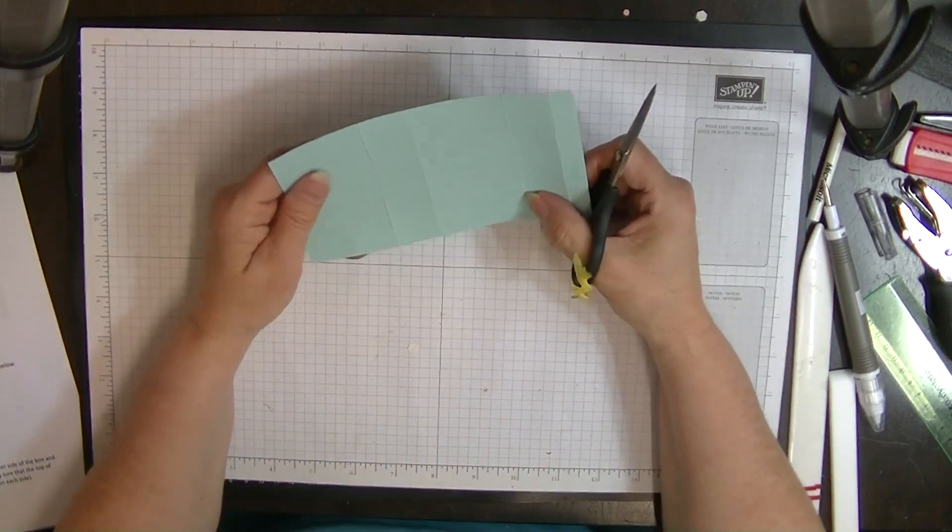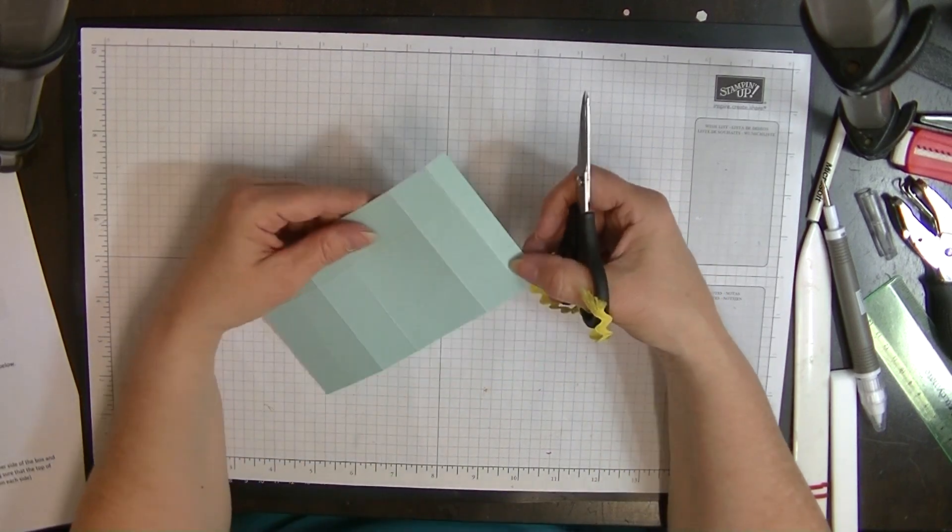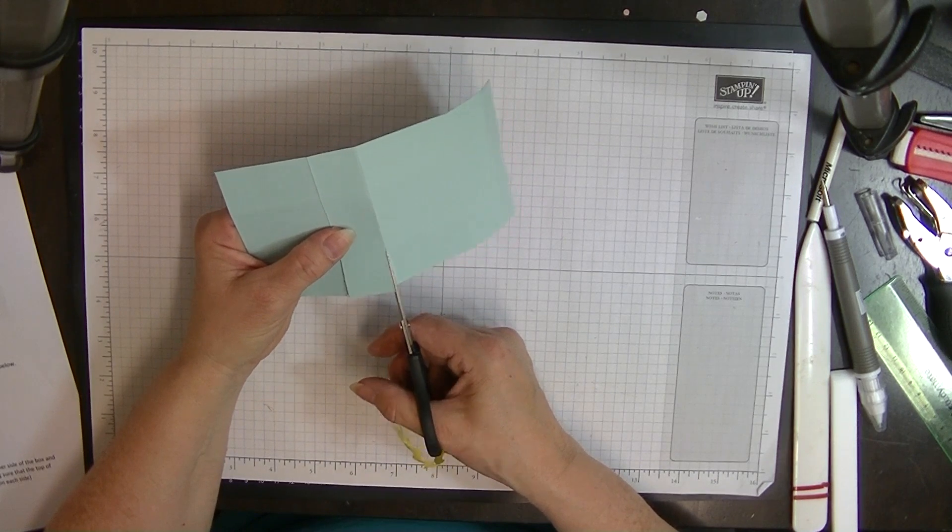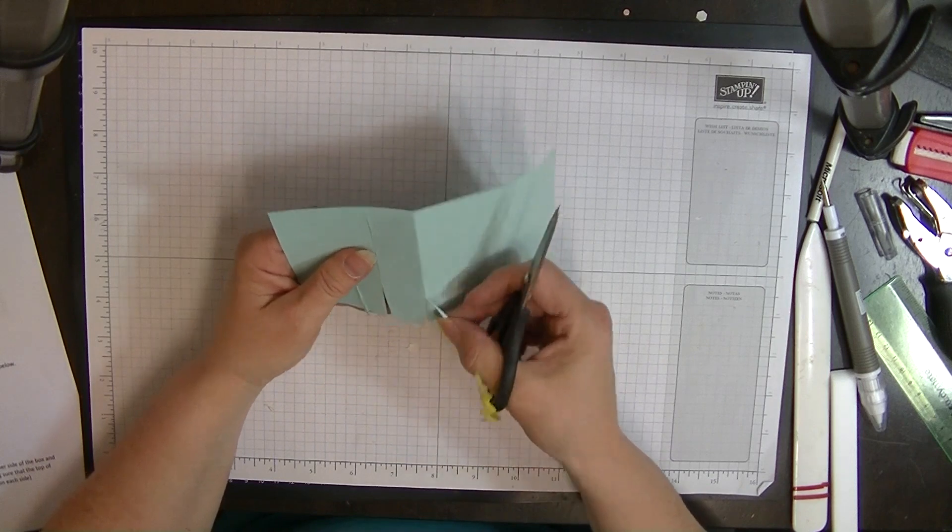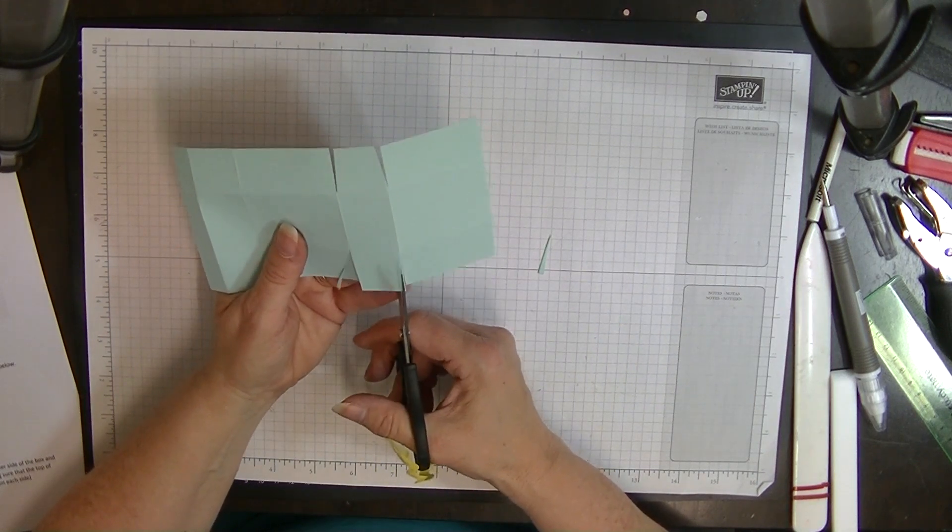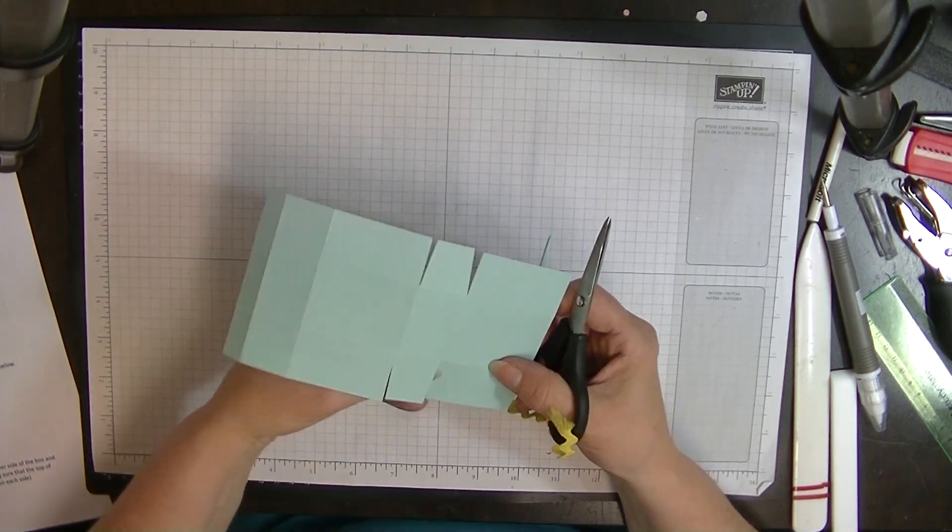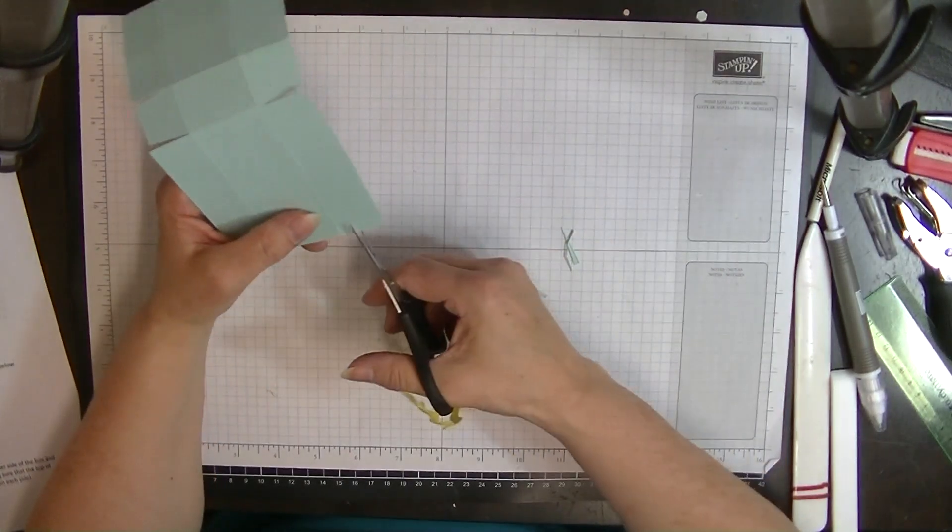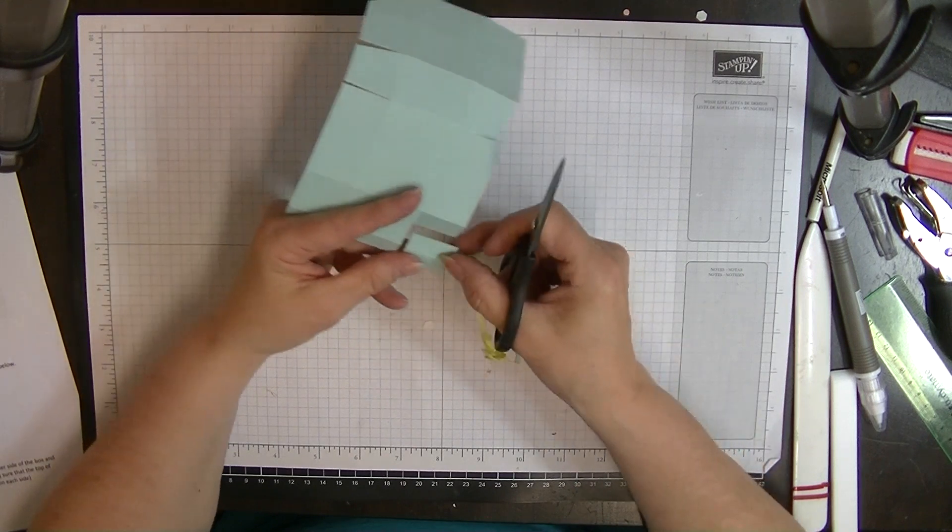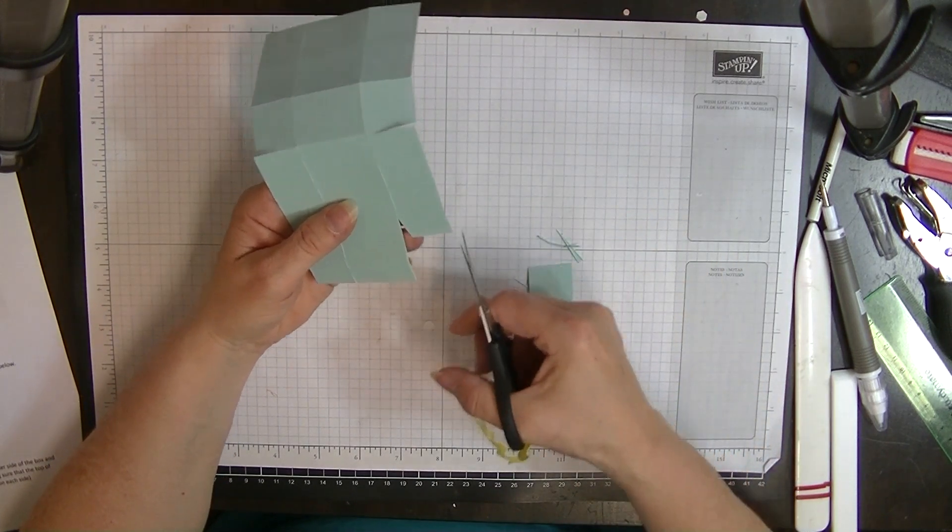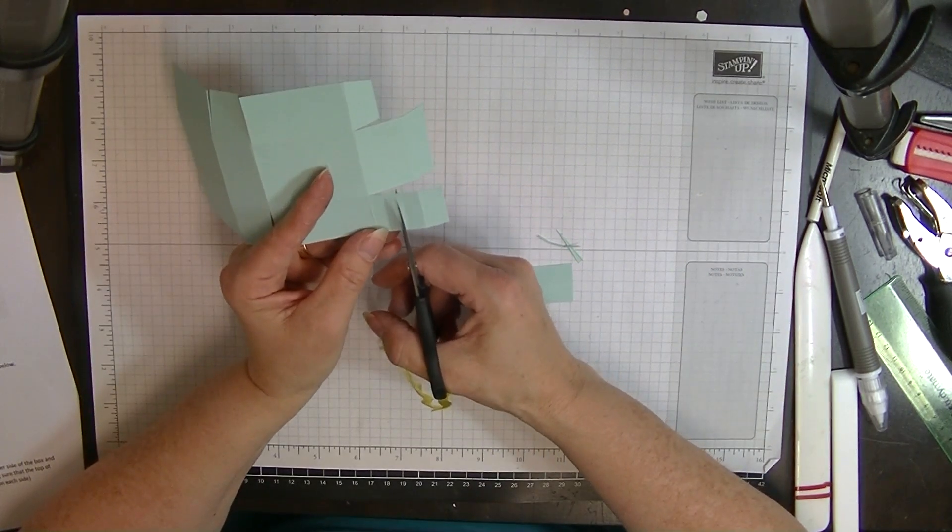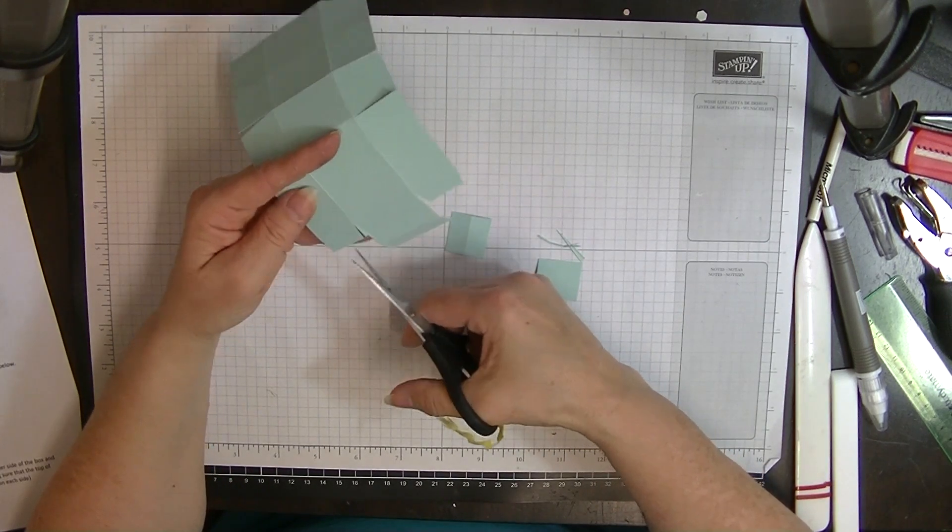So now that we've got that all scored. You can see all the score lines on there. We can fold and burnish all these score lines. Okay. Now what we're going to do is we're actually going to do a little bit of cutting on this. So with our smallest one, smallest score line at the top here on the right hand side, we're going to cut down this score line here and here and notch them off. I'm going to turn it around and we're going to do exactly the same on the other side. Like so.